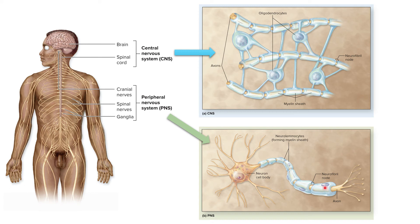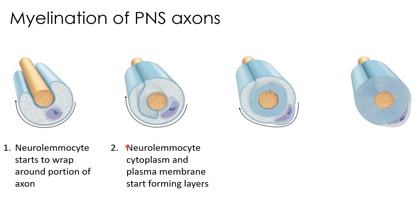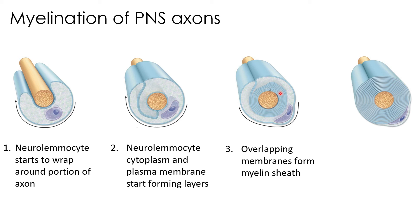We're not going to worry about the process of myelination in oligodendrocytes, but I do want to spend a few minutes talking about how myelination occurs by neurolemocytes. In this image, the yellow cylinder represents a nerve, and initially the C-shaped cell is the neurolemocyte. This is a four-step process. Initially, that neurolemocyte starts to wrap around the portion of an axon, and as that wrapping continues, the neurolemocyte cytoplasm and plasma membrane start forming different layers — it's wrapping around almost like a piece of tape going along a spool.